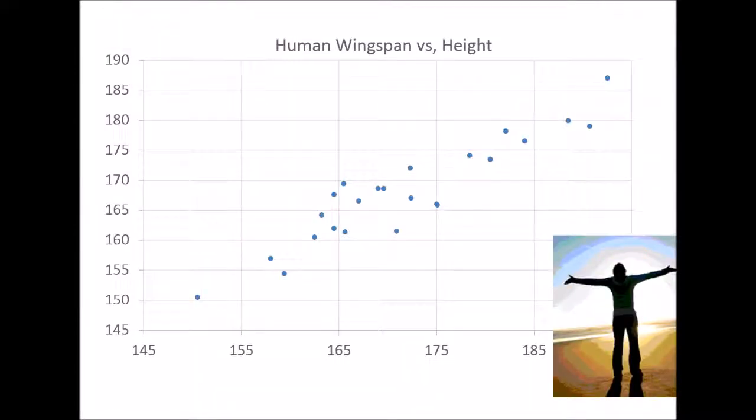Consider the experiment of asking about 40 to 50 students in a class to allow us to measure their wingspan, which is the distance between their fingertip to fingertip when their arms are outstretched. Then plot that against their height.